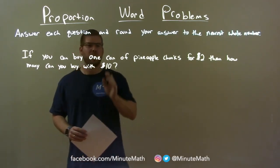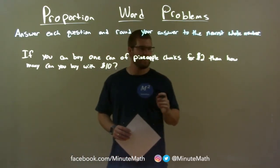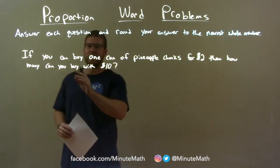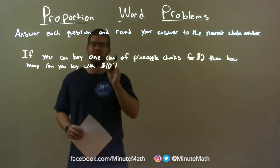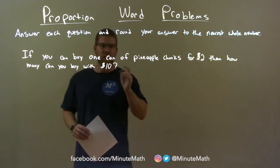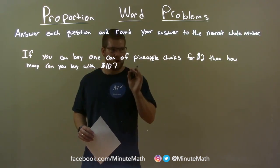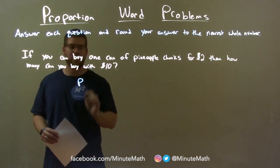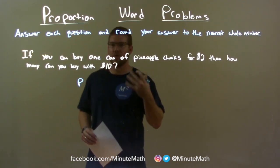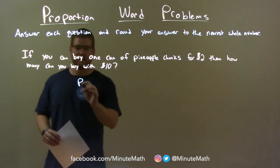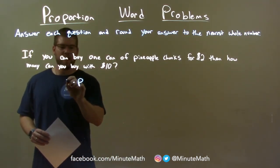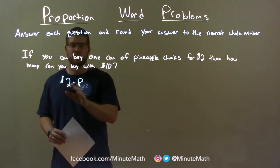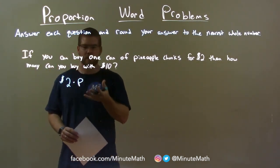If you can buy one can of pineapple chunks for $2, then how many can you buy with $10? The number of pineapple chunks we can buy, let's write that as P. We know it's $2 per chunk, so we have $2 per one each pineapple chunk.